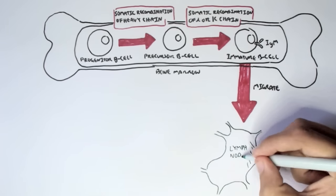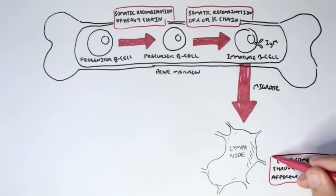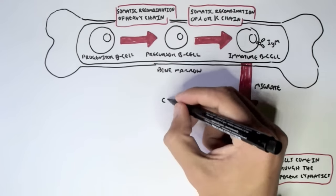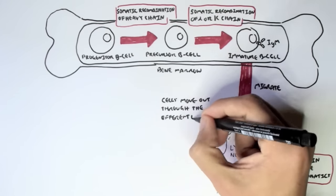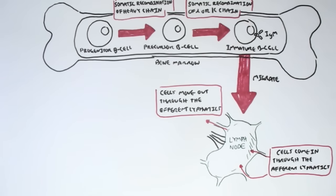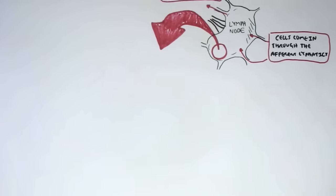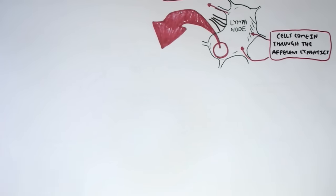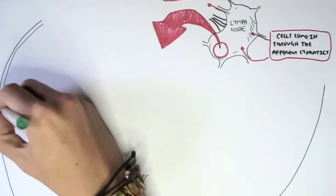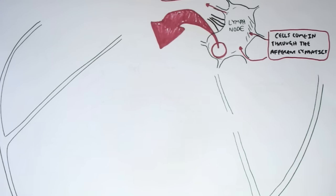After an immature B cell has been formed, it will then migrate to the lymph nodes, where it will come in through the afferent lymphatics. Cells that go out of the lymph node will leave through the efferent lymphatics, and the black structures coming into the lymph nodes are the veins and arteries. Now let's take a cross section of the lymph node to see where the immature B cell is, how it becomes activated, and what it does to undergo hypermutation and class switching.